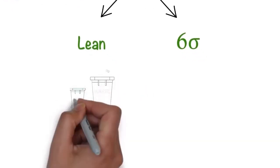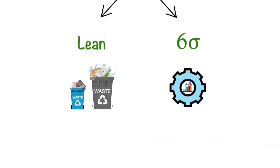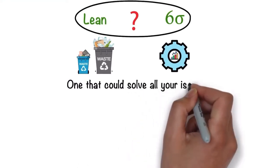One famous for its ability to handle waste and another known for process improvement. But what if there was a methodology that combined the concepts of both Six Sigma and Lean? One that could solve all your issues?